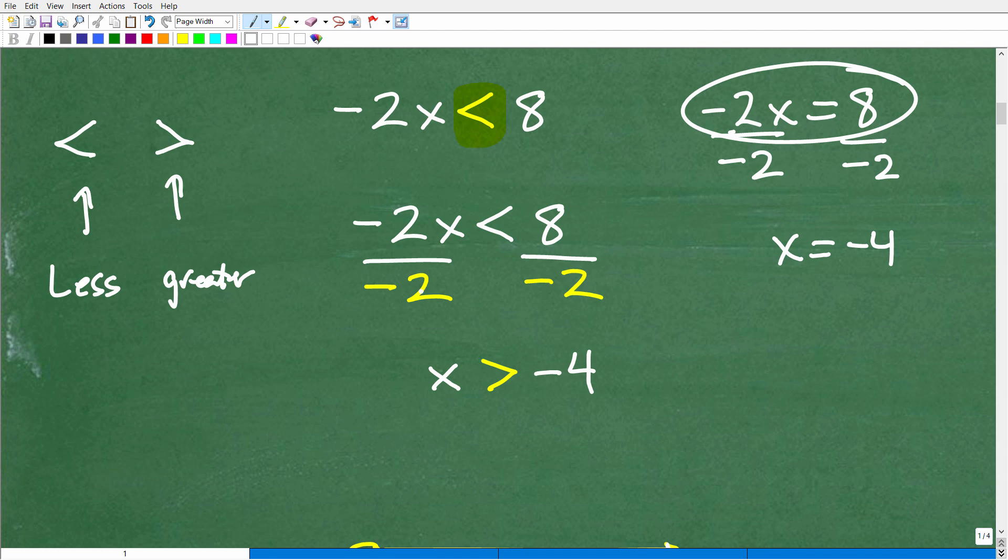So, negative 2 divided by negative 2 is a positive 1x. And then 8 divided by negative 2 is negative 4. But here is where a lot of students make a mistake. So, here, notice we have this less than symbol. And now, notice what I wrote down here. I switched this to greater than. Why is that?